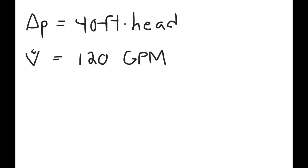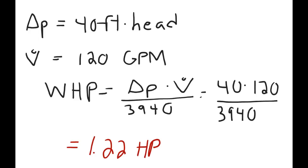To find the water horsepower or the output of the pump, you have to use the working equation. WHP equals delta P, which is the change in pressure, times the volume flow rate, 120 gallons per minute, over 3,940. If we calculate the equation out, delta P multiplied by the volume flow rate over 3,940, the total output of the pump, water horsepower, is equal to 1.22 horsepower.